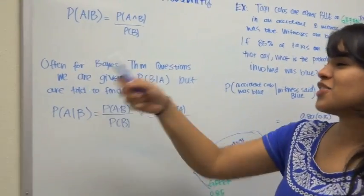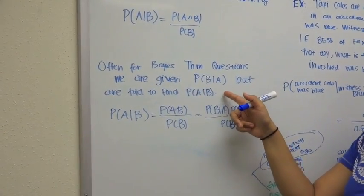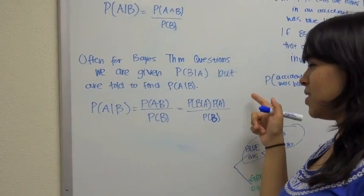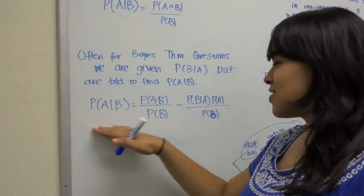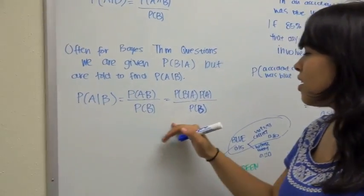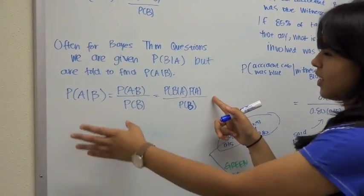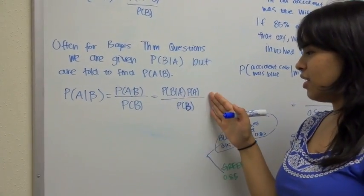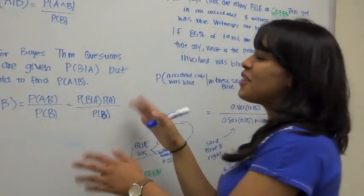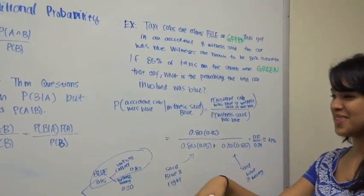For Bayes theorem questions, we are often given the probability of B given A but are asked to find the probability of A given B. Using the conditional probability definition, we can expand this expression by applying conditional probability to the top half. This may look like it has a lot of variables, but we're going to go through an example to help clarify that information.